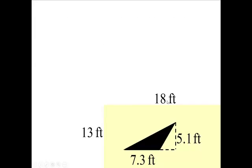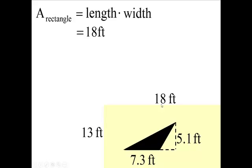Now the area of a rectangle is the length times the width or the base times the height. So we're going to have the length, which is 18 feet, times the width, which is 13 feet. You multiply those, you get 234 square feet.